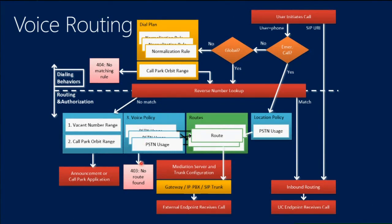The policy either finds no route — the user doesn't have permission — or finds the correct route, which specifies a gateway, and the call is routed to the PSTN or PBX. The last part is we can still manipulate the number after deciding where to send it. Maybe I'm connected to a legacy PBX that doesn't want E164 format, so I can manipulate both the dialed number and the caller ID using regular expressions — for example, just forward the four-digit extension so the PBX can handle it.